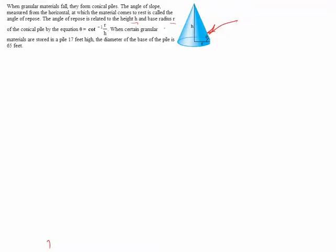If you have height h and radius r, then the formula for that becomes theta is equal to the cotangent inverse of r over h. They give us a specific value of a height and a radius.